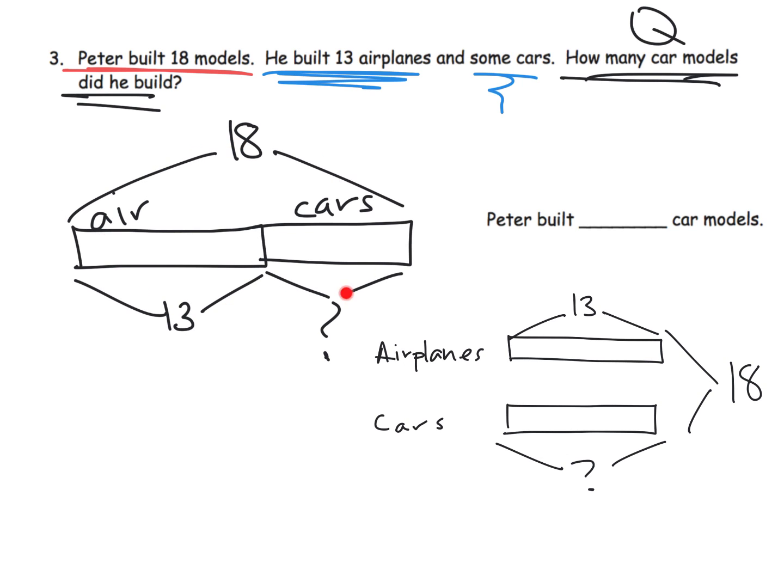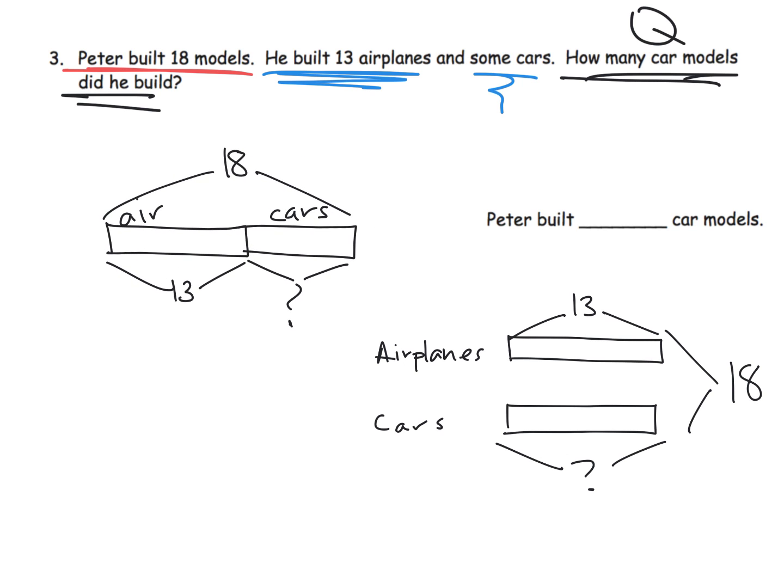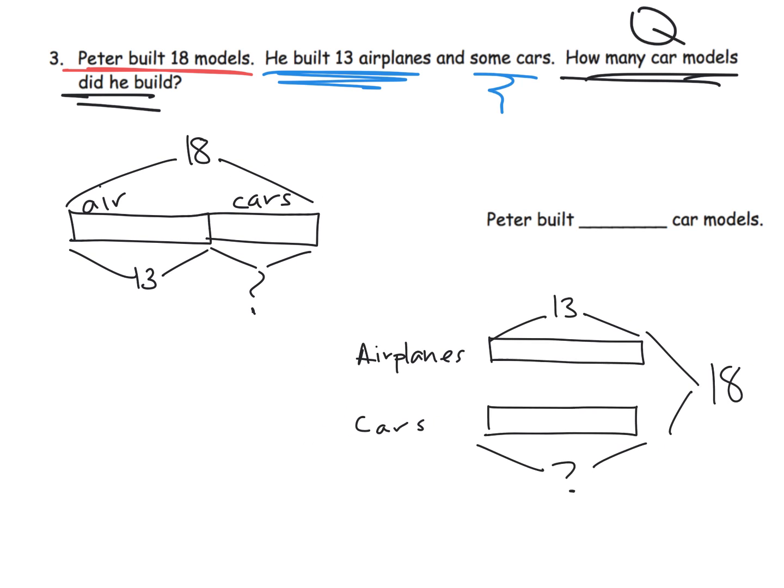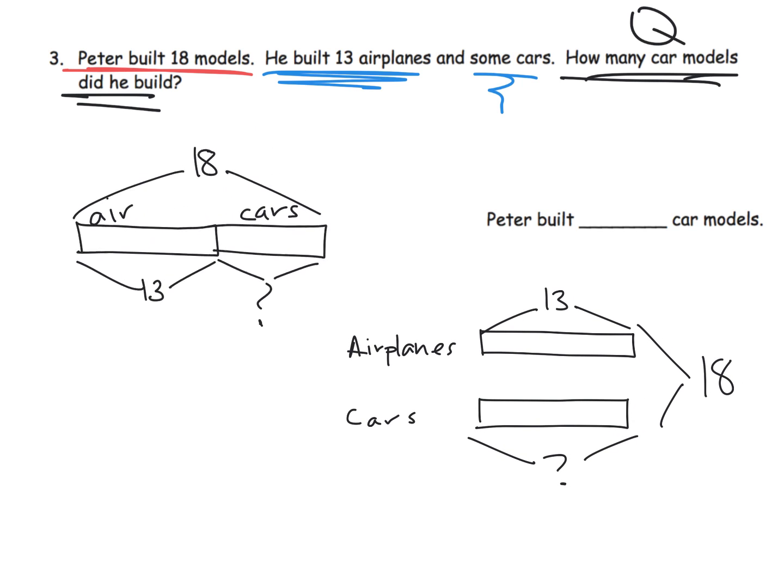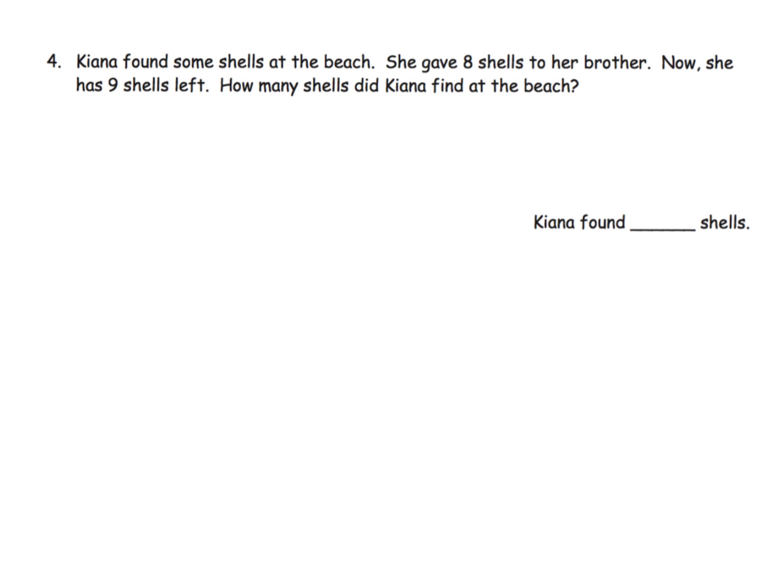And then the total is right here, and that's 18. So this is a more classic, more traditional way of modeling this question. But I just wanted to point out there are two common ways. This way is more like the Singapore method. This way is what's really being advocated right now in the Eureka Math book. And the last one.